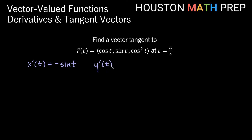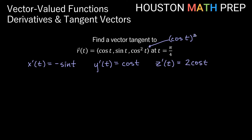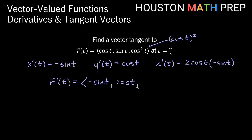For y prime of t, the derivative of sine of t is cosine of t. For z prime of t, cosine squared of t is like cosine of t all squared — this is a chain rule with a power rule on the outside. The 2 comes out front, cosine t stays, the power goes down by 1, and we multiply by the derivative of cosine of t, which is negative sine t. So r prime of t is: negative sine t, comma, cosine of t, comma, negative 2 sine t cosine t.